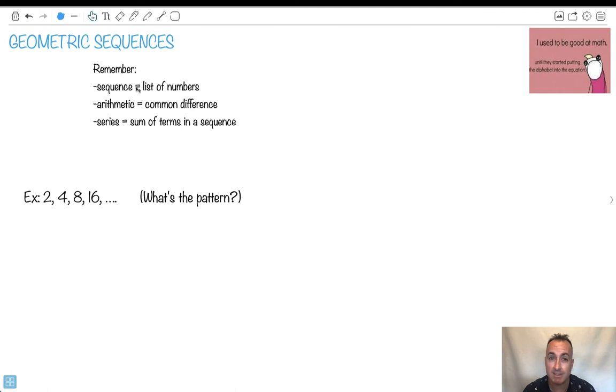So remember what a sequence is. It's a list of numbers. And remember what a series is. It's a sum of the terms. What made it arithmetic? We've learned that before. Arithmetic just has a common difference between all the terms. Well it's a different type of sequence.